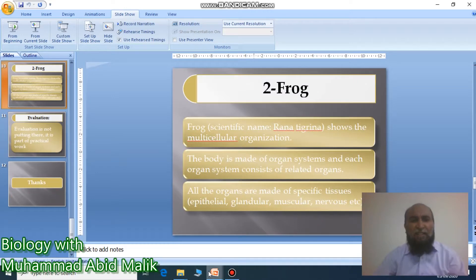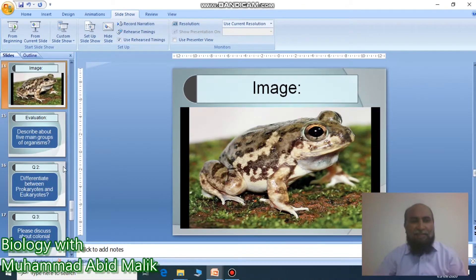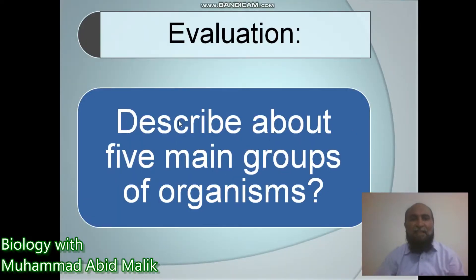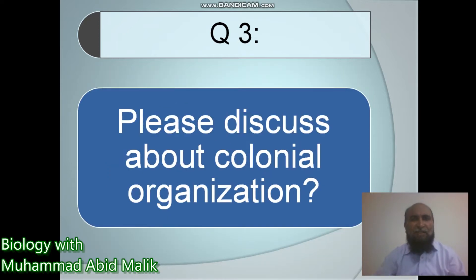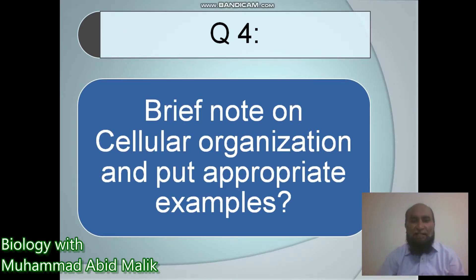Now for evaluation: First, describe the five main groups of organisms. Second, differentiate between prokaryotes and eukaryotes — if you have an understanding, put your views in the comments. Third, discuss colonial organization. Fourth, write a brief note on cellular organization with appropriate examples.